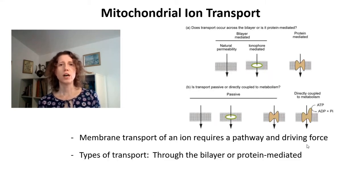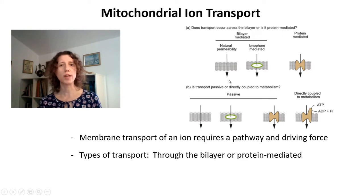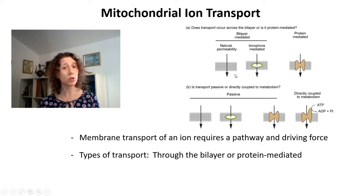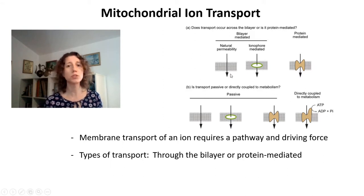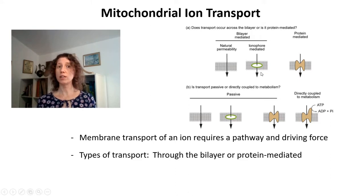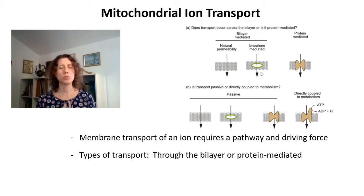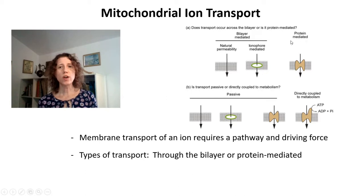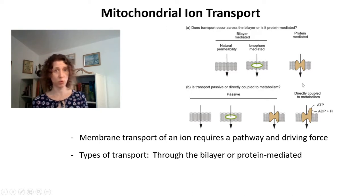There are different types of ion transport. First, transport can happen through the bilayer of phospholipids themselves. This can occur because whatever is being transported is naturally permeable to the bilayer, though typically that's not the case with ions because they have charges. It can also happen when a substance masks the charge of what's being transported, like an ionophore. And also, you have transport through proteins, which is what we'll talk about a lot today — protein-mediated transport through the inner mitochondrial membrane.